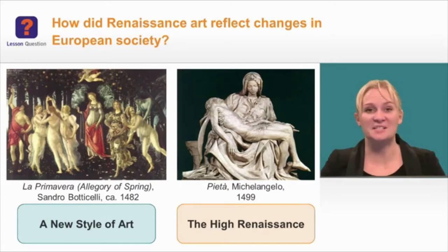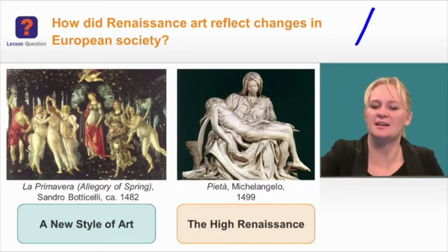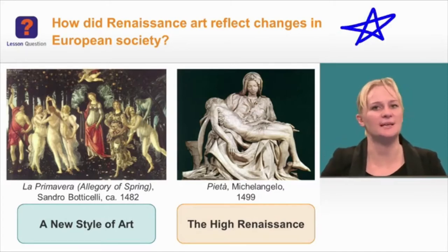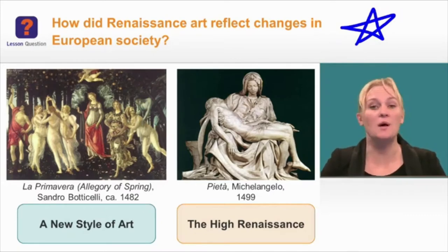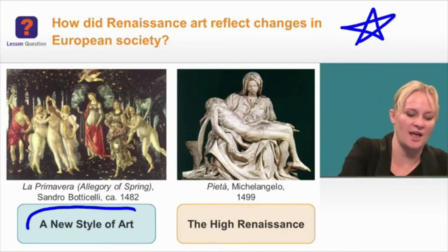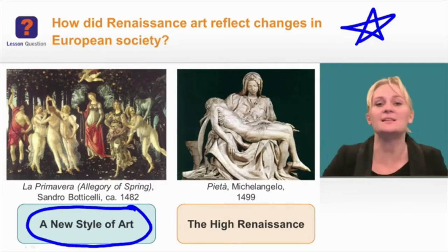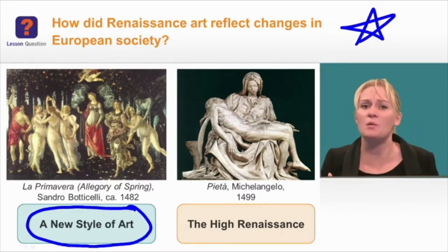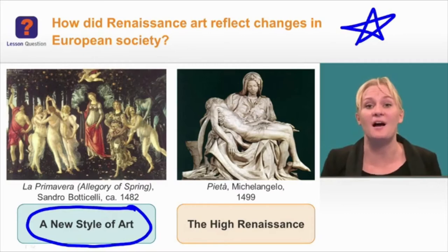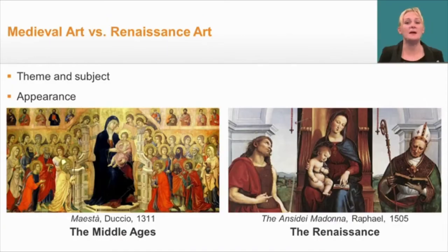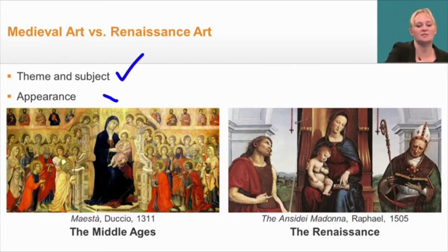Let's go back to our lesson question: how did Renaissance art reflect changes in European society? To begin with, we're going to look at a new style of art. To do that, we need to compare the new style with the old style. Let's start by comparing medieval art to Renaissance art, looking at themes, subjects, and appearances.